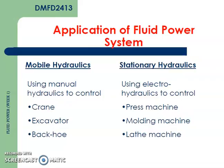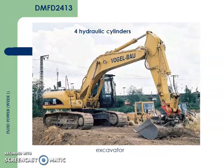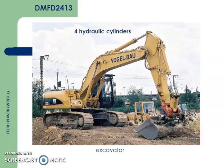Some of the applications for fluid power systems include cranes, excavators, backhoes, electro-hydraulic systems for control, press machines, molding machines, lift machines, and other industrial machinery. These are examples of hydraulic cylinders used for excavation. In this picture we can see at least four hydraulic cylinders used in order to move the arm of the excavator.